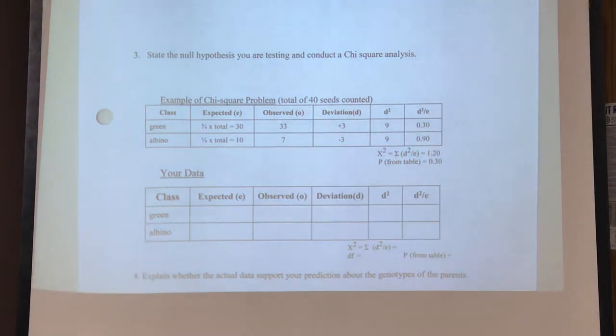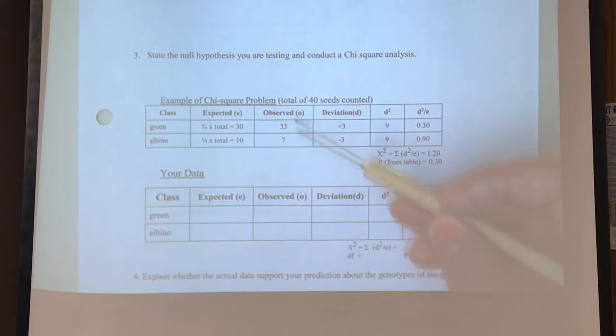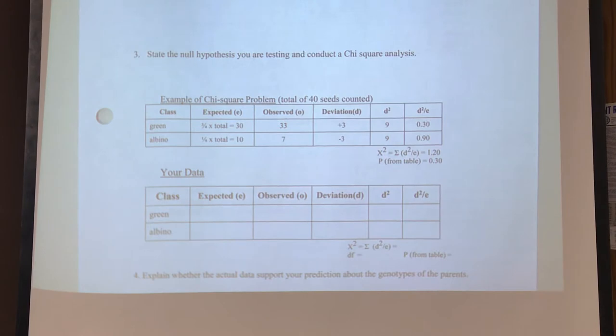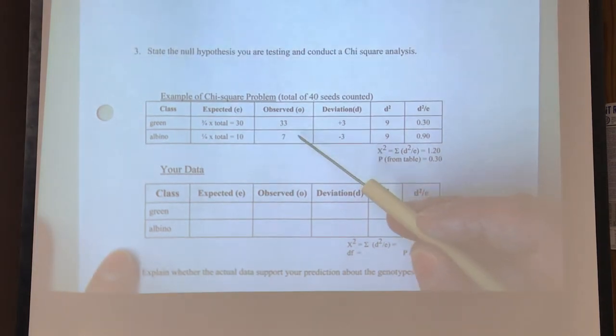All right, now, what we're trying to do is to show that maybe our results, what we observed, may not actually match what we expected, but what we're trying to do with the chi-squared test is to show are we close enough then. All right, and so here our actual results were 33 green, 7 albino.